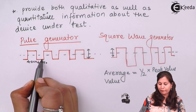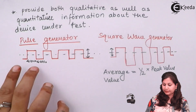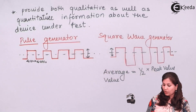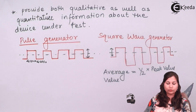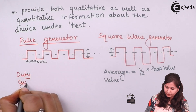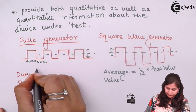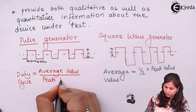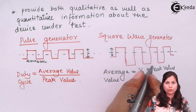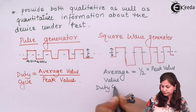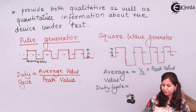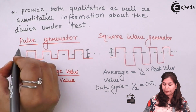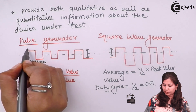In the on period we are having a pulse; in the off period no pulse is generated. So the pulse generator has different on and off periods, whereas the square wave has equal on and off periods. In a square wave the average value is equal to half of the peak value. If we define the duty cycle as the ratio of the average value divided by the peak value, in the case of the square wave the duty cycle will come out to be 0.5.